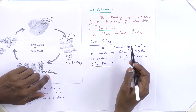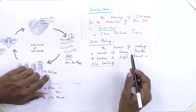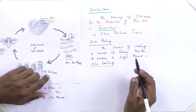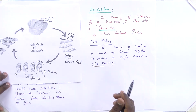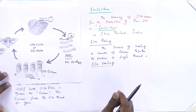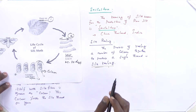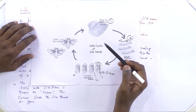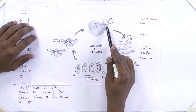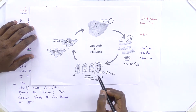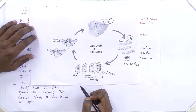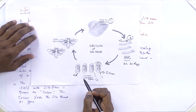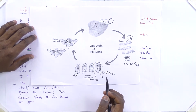The sericulture method is followed mainly in China, Thailand, and India, which are most famous for silk fiber production. Silk reeling is the process of combining a number of cocoons together to produce a single silk thread. In this way, silk filament yarn — the most luxurious natural filament — is produced.